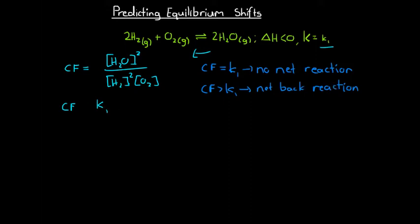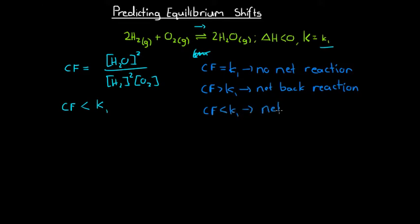The other possibility is if the concentration fraction is less than the equilibrium constant. In that case, as the system reaches equilibrium, the concentration fraction will increase up to K by increasing the concentration of water and decreasing the concentration of hydrogen and oxygen — so it will undergo a net forward reaction. When the concentration fraction is less than K, a net forward reaction will occur in order for the reaction to reach equilibrium.